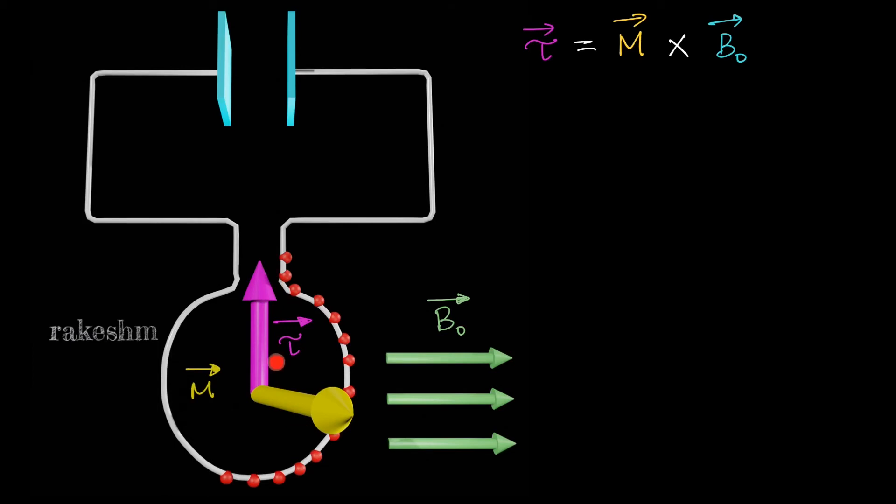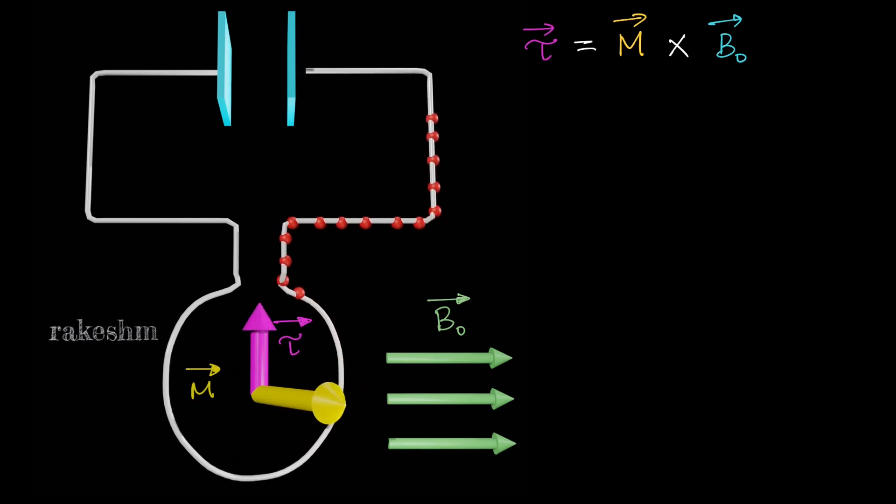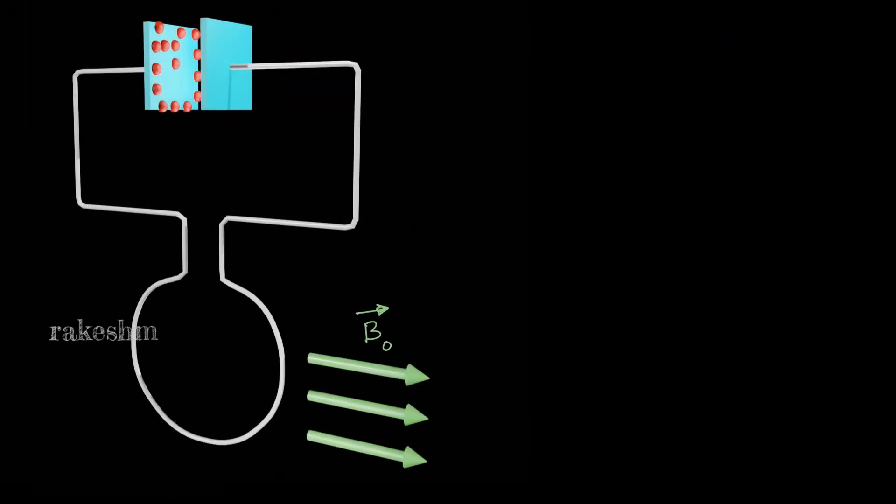You can see that this torque acts for a very short time as the discharge of the current is very fast. When the charge leaves the loop, the magnetic moment of this coil becomes zero and the torque acting on it also becomes zero. Let's take a look at this from a different viewpoint so that the magnetic moment vector is more clearly visible.